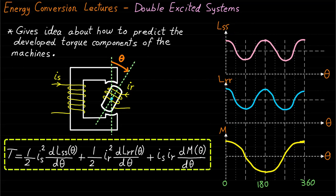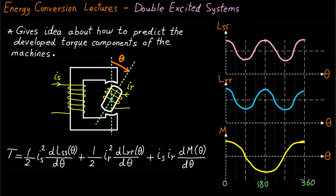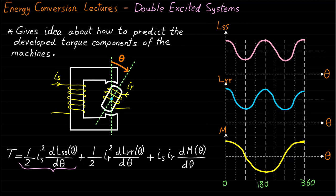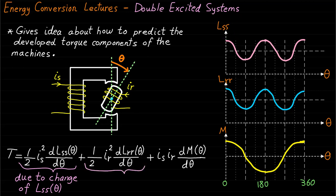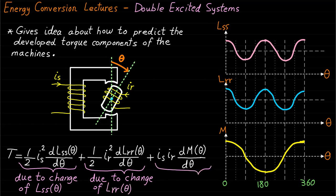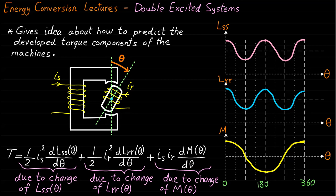The total torque expression has three terms because of the variation of these three inductances. The first term is produced because of the variation of the stator self-inductance LSS. The second term is produced because of the variation of the rotor self-inductance LRR. The third term is produced because of the variation of the mutual inductance M. These inductances can be represented mathematically as follows.